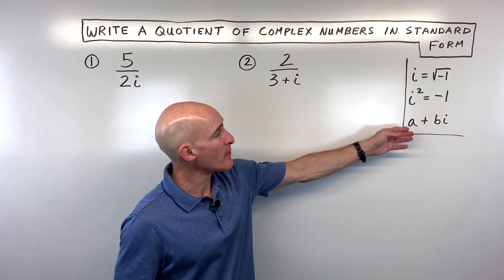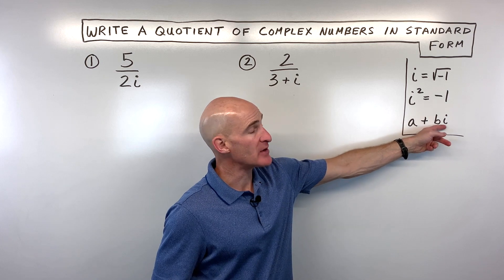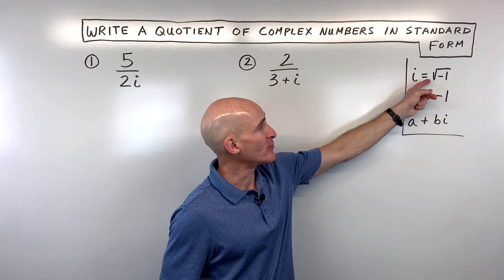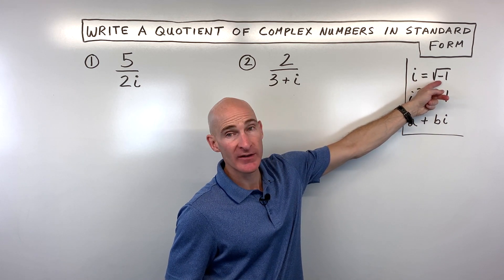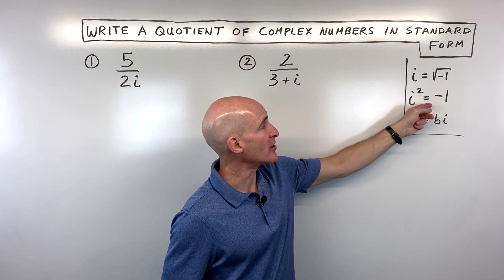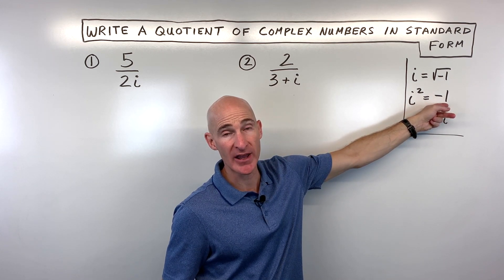Just a quick reminder: the standard form is this a plus bi form. Remember, i represents the square root of negative one, whereas i squared is just equal to the integer negative one.